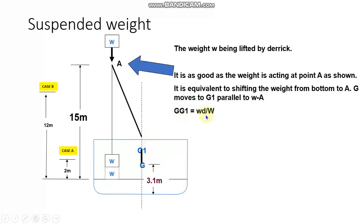So we take this basic formula for shifting of center of gravity: GG1 is small w into d by capital W. Small w is the weight being lifted, d is the distance moved, and capital W is the mass displacement of the vessel.